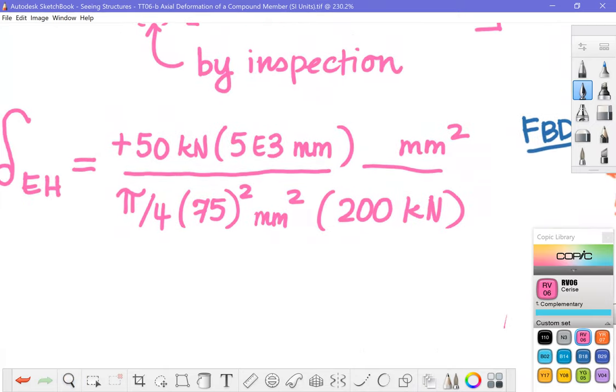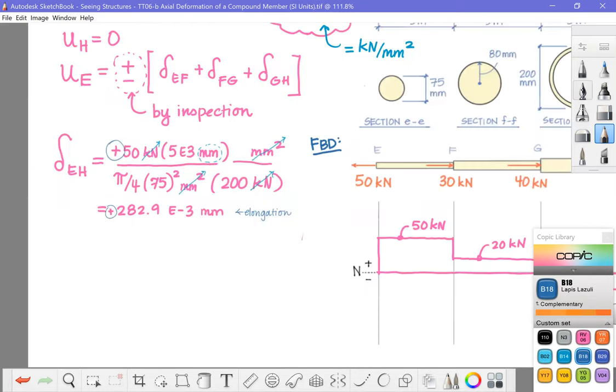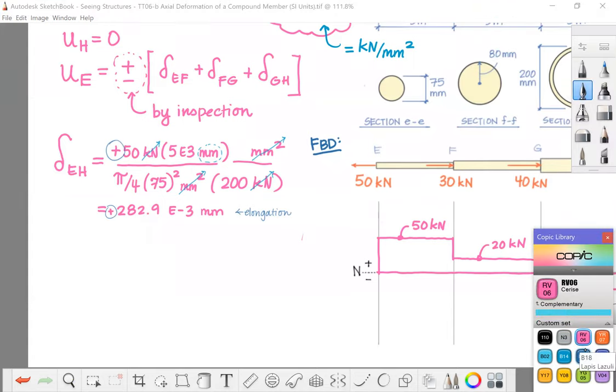Check units. Cancel things out. So now I've got my kilonewtons. Millimeters squared from the area. Millimeter squared up there. That leaves total units of millimeters. When you multiply this out, you are going to get 282.9 E-3 millimeters. And it is positive because the force is positive. That means that this is an elongation.